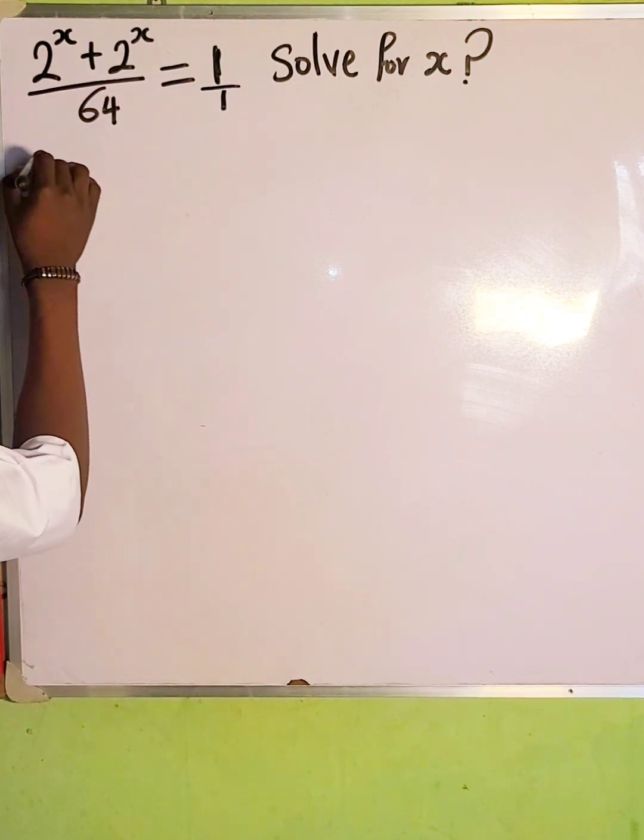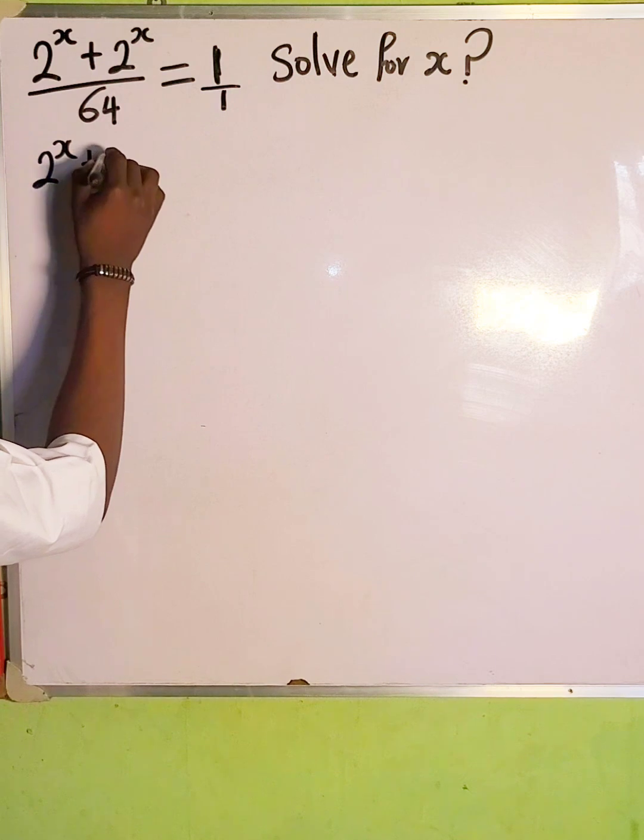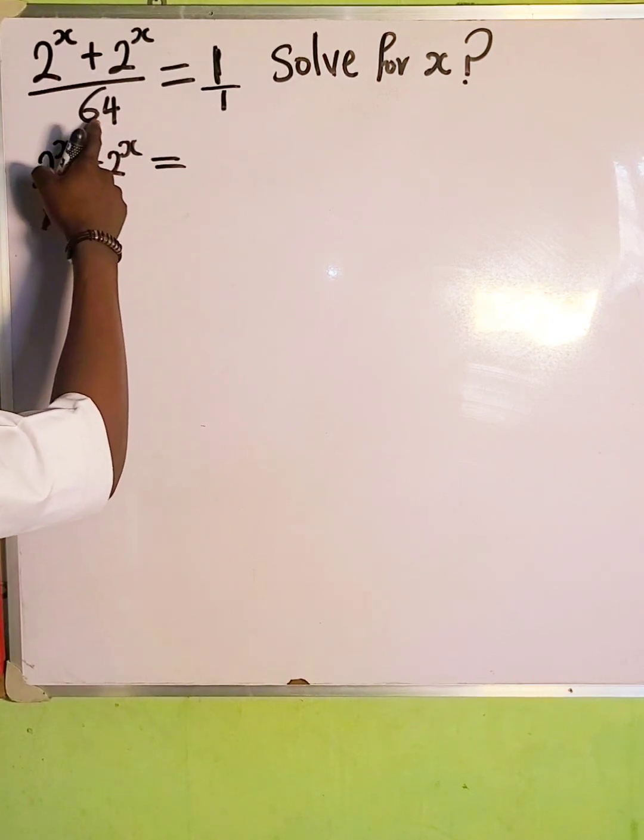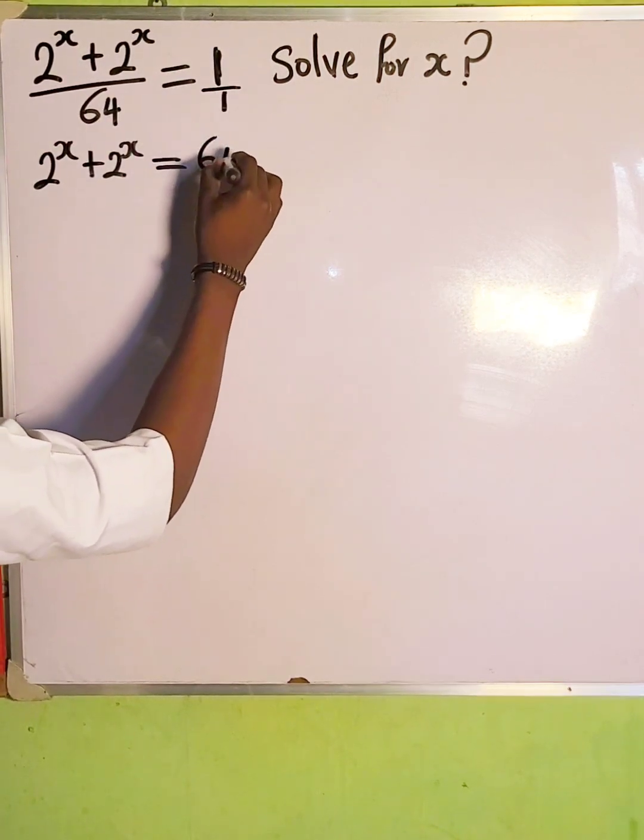So 1 multiplied by the whole of this is the same as 2 to the power of x plus 2 to the power of x, which is equal to 64 multiplied by 1, which is the same as 64.